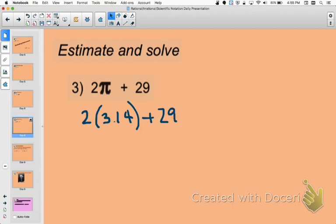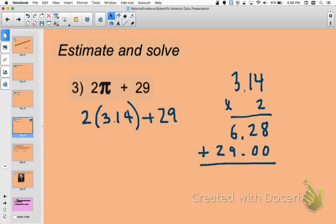Alright, again, remember your order of operations, and we're going to multiply 3.14 times 2 as our first step. That multiplication should happen before addition. That gives me 6.28. Now I need to take that plus 29, which I'm going to write as 29.00, keeping my decimal points lined up for addition. 6 plus 9 is 15, carry the 1, and I get 35.28 as my solution.